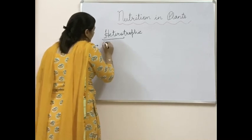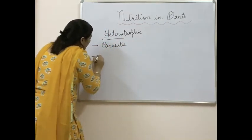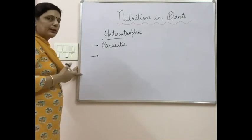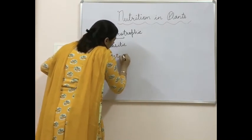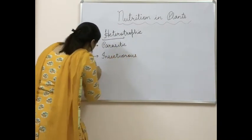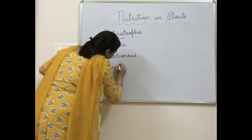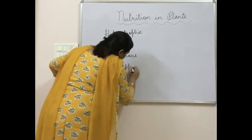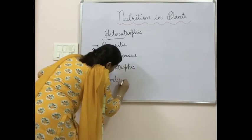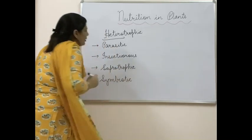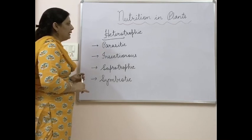The four subtypes of heterotrophic mode of nutrition are: one, parasitic mode of nutrition; two, insectivorous mode of nutrition; three, saprotrophic mode of nutrition; and four, symbiotic mode of nutrition. These are the four main modes we are going to study in detail.